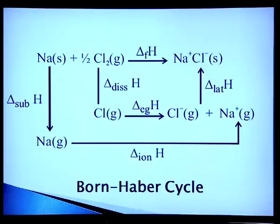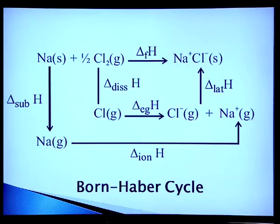If the heat of formation is negative, the compound will form; if positive, the compound will not form. The Born-Haber cycle can be seen in diagram form: Na(s) + ½Cl₂(g) → NaCl(s). The five steps are: heat of sublimation, ionization enthalpy, dissociation energy, electron gain enthalpy, and finally lattice energy.